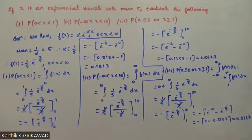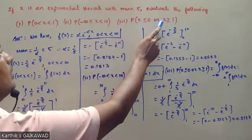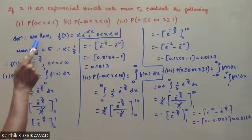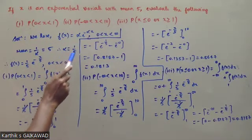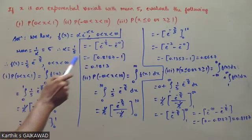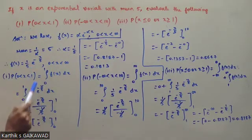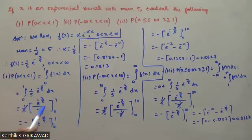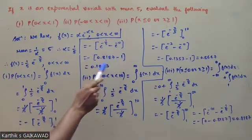To summarize: if x is an exponential variate with mean phi (mean = 5), we have f(x) equals 1 by 5 e to the power minus x by 5 for x from 0 to infinity, since mean equals 1 by alpha equals 5 gives alpha equals 1 by 5. First, P(x between 0 to 1) equals 1 minus e to the power minus 1 by 5, approximately 0.1813. Second, P(x between 0 to 10) equals 1 minus e to the power minus 2, approximately 0.8647.